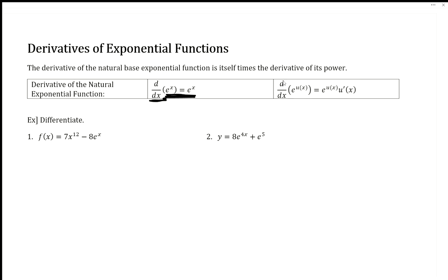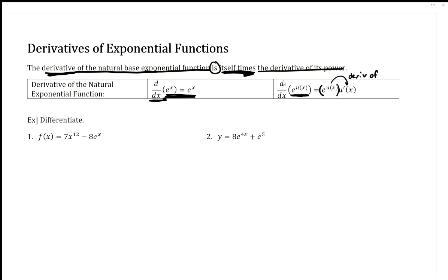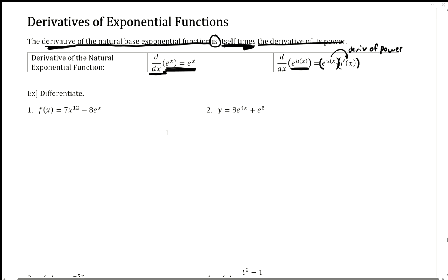The derivative of e to the x is e to the x. That's as basic as it gets — it's a nice one. But when it gets more complicated, the derivative of the exponential function is itself times the derivative of its power. So we just copy the exponential function and then multiply by the derivative of the power. I think expressing it in words can be very powerful, and we'll show it both ways.